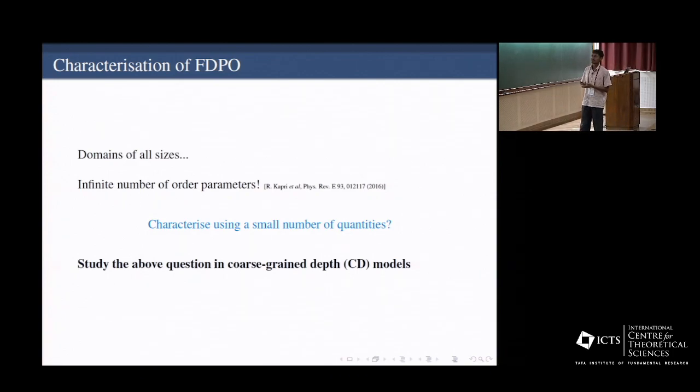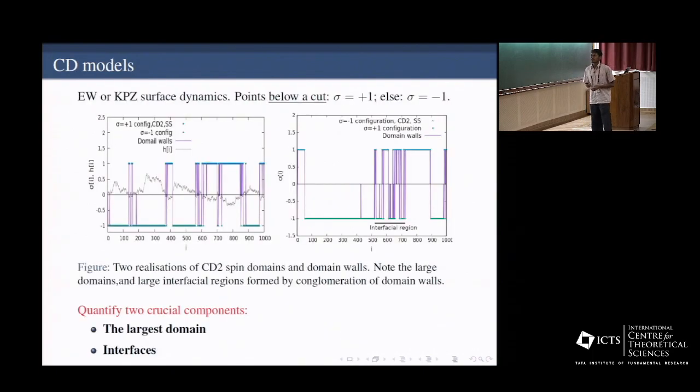This question we address in the context of the Corrigan depth models, the CD models. So this is a model defined through an interface. So it is like there is a flat interface, you sprinkle particles, now you allow the interface to roughen, it develops a structure, and the particles just follow into it, and the particle clusters form. Now, for simplicity, we just define a reference height, and all the surface points below the reference height is assigned a spin minus one, above it is assigned a spin plus one. And these are two realizations of the up-spin and down-spin domains. These are two different spin domains, and you can see that there are many large domains separated by interfaces, but you can also have large domains, and there can be a very large interface also.